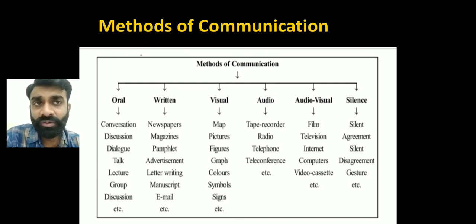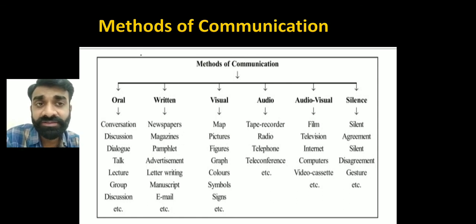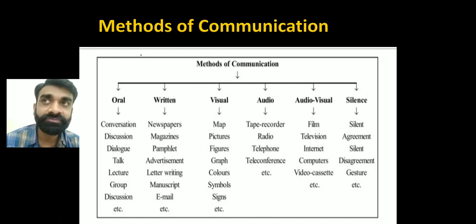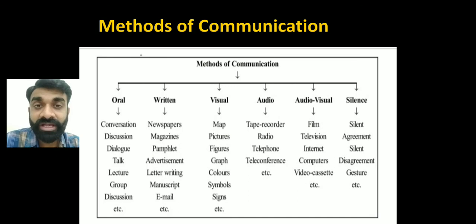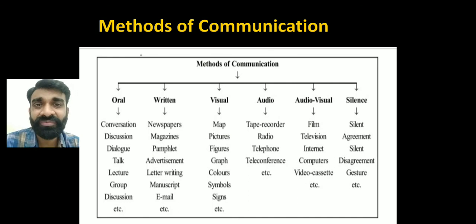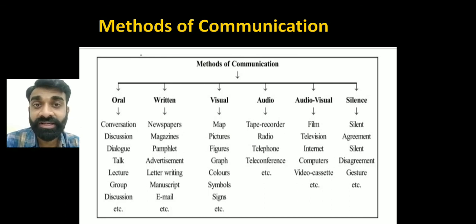Oral communication methods are adopted in informal organizations or among groups of friends. Visual communication includes maps, pictures, figures, graphs, colors, symbols, and signs. Audio includes tape recorders, radio, telephone, and teleconferencing. Audio-visual includes film, television, internet, computer, and video cassette. Right now we are using audio-visual — I am speaking, you can see me and the PPT. Silence includes gesture, silent agreement, such as waving to friends.